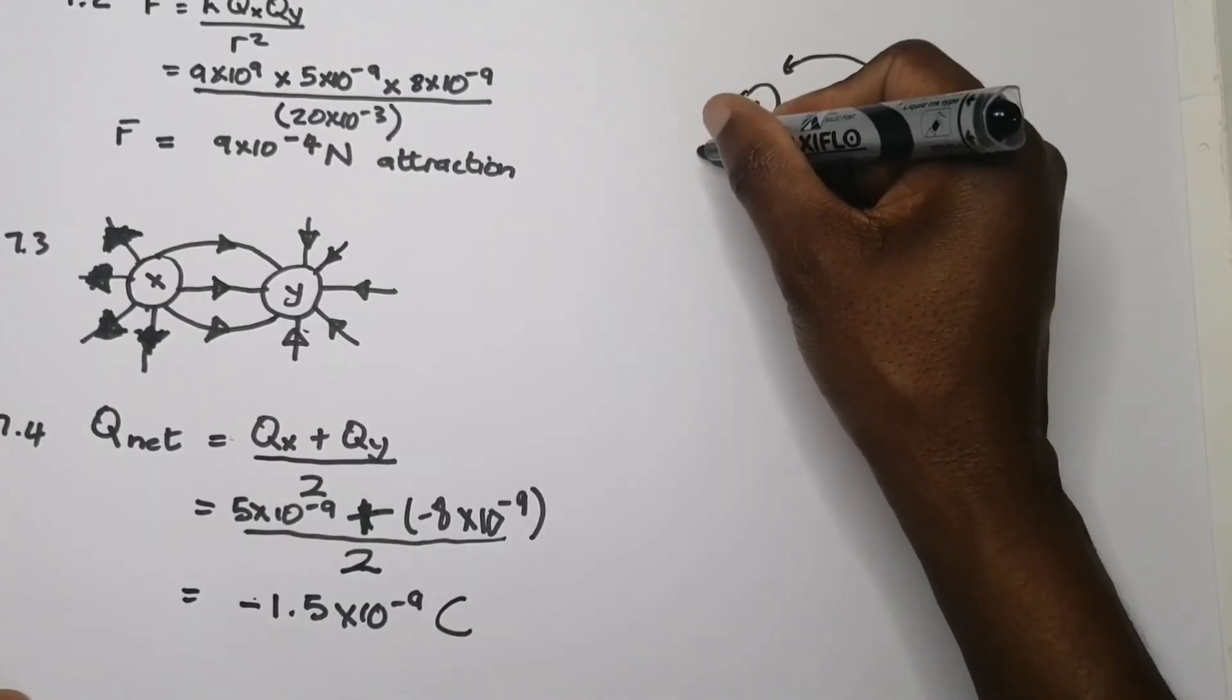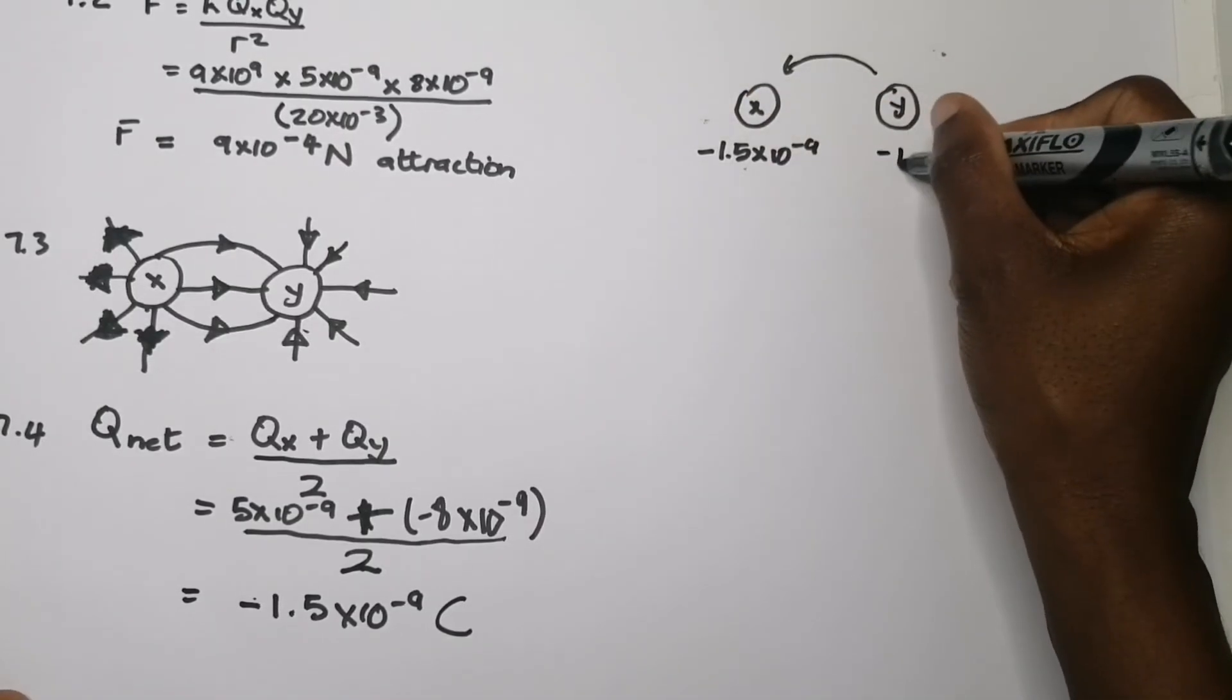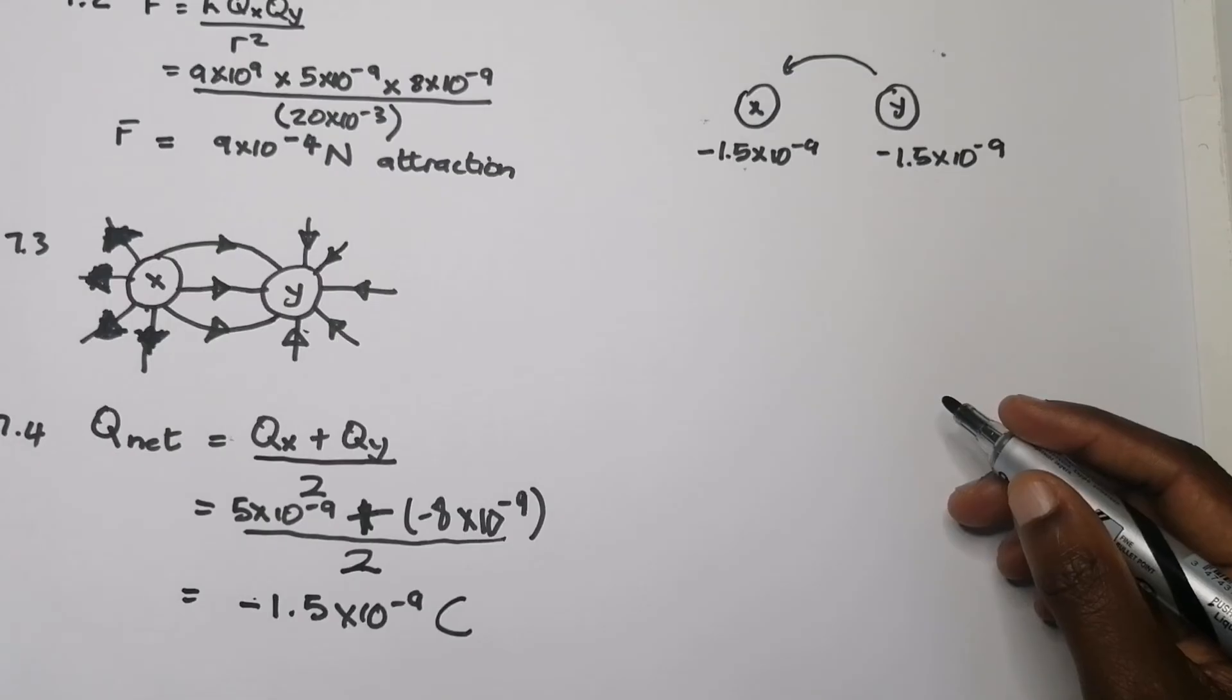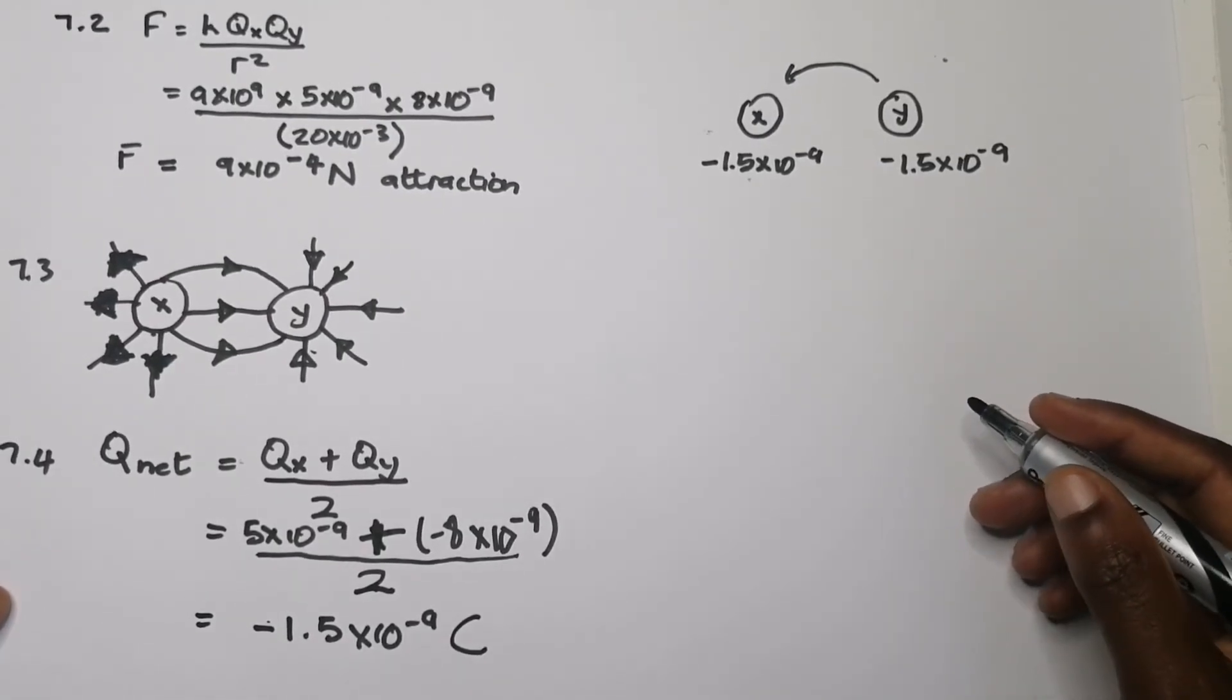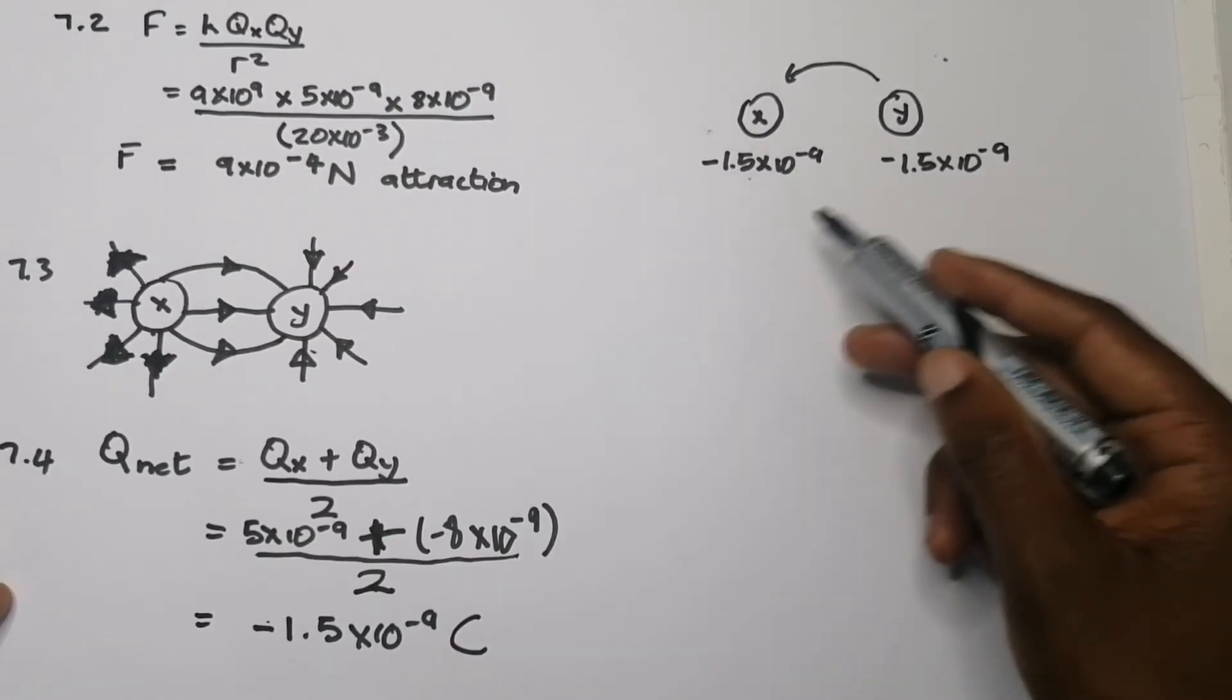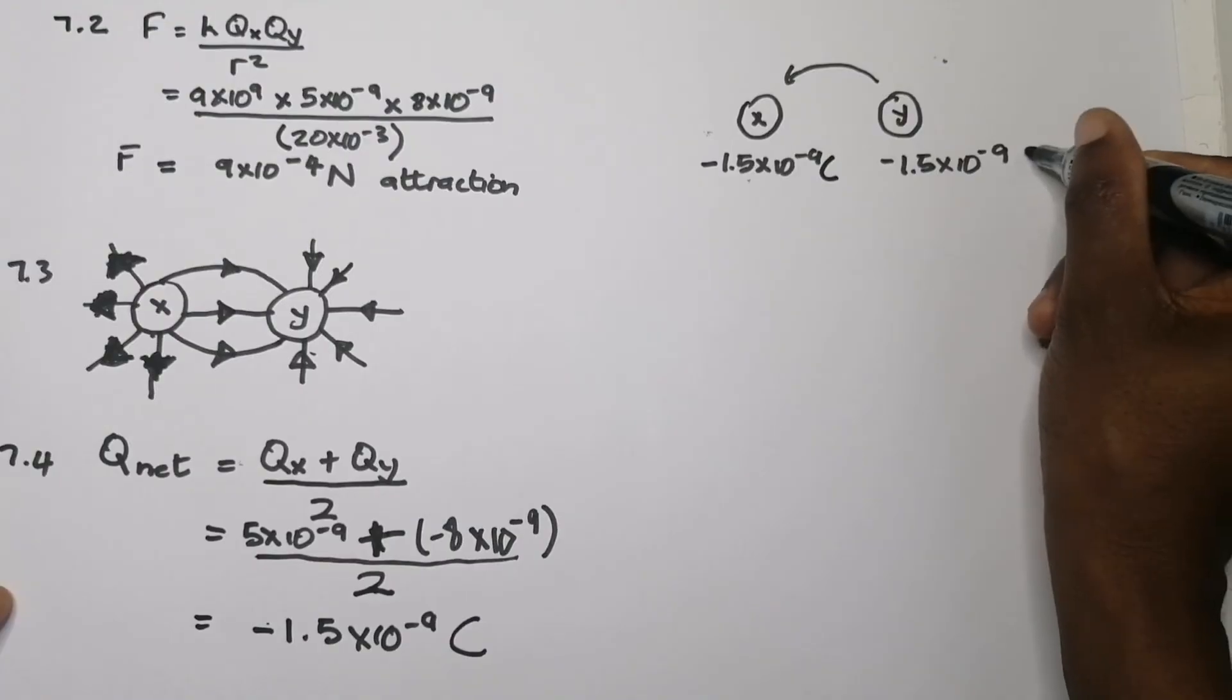Now, afterwards, after touching, both of them have got a negative charge of minus 1.5. So this would be the new charge. And that's why they would repel each other because now the polarity would be the same. And not only would it be the same polarity, both negatively charged, but they would also have the same magnitude. So this is coulombs.